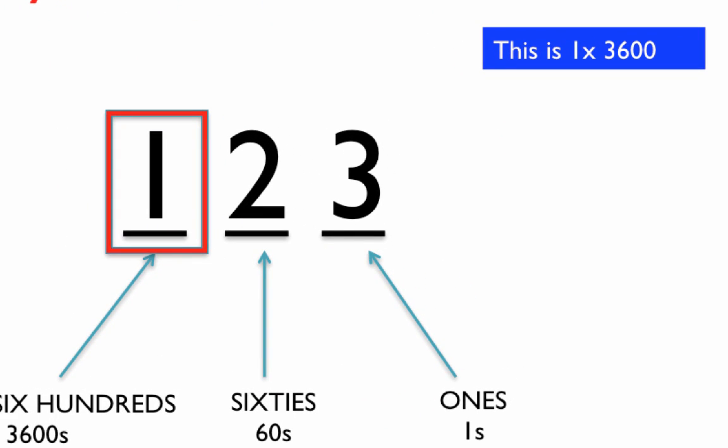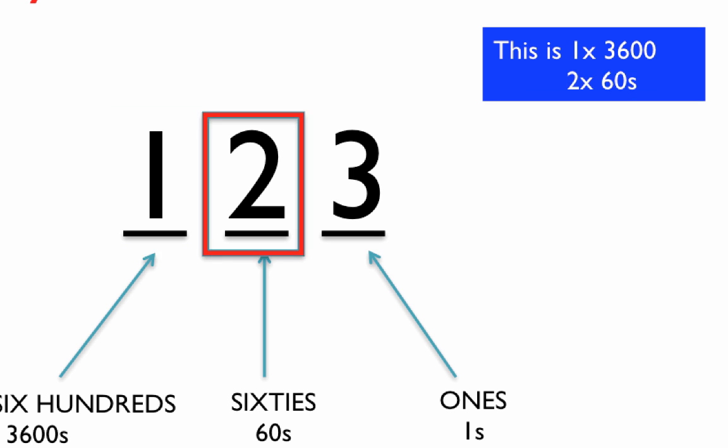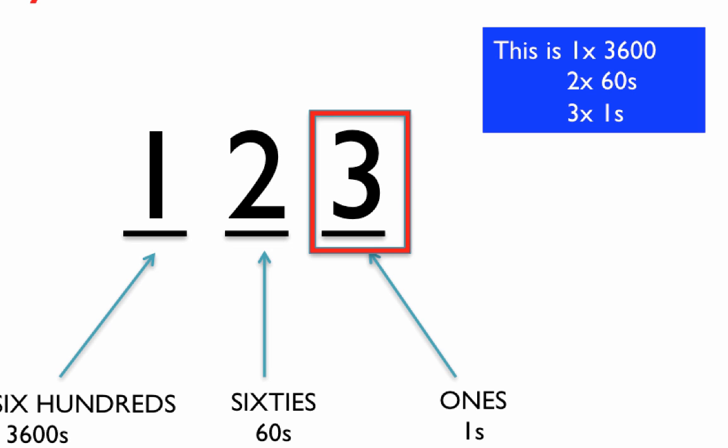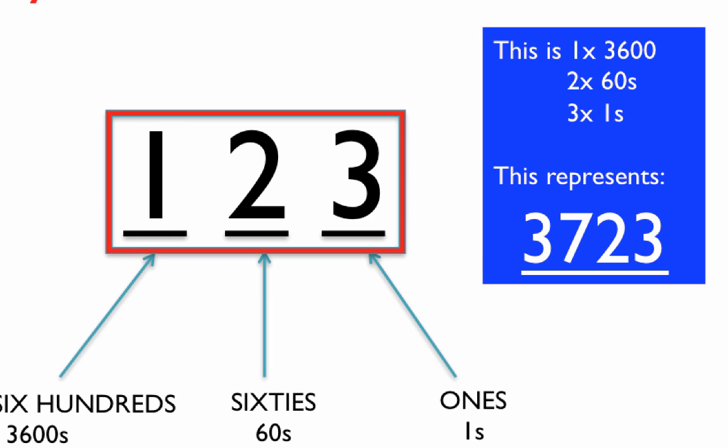The number 1 in the 3600s column represents 3600. So the number 123 in their system — using our digits — would be one 3600, two sixties, and three ones. If we put all of that together, this number represents 3723. We're going to look at some examples to make that clearer.